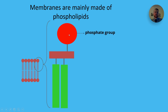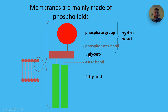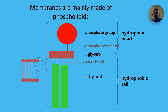First of all, we have the phosphate head, which has a chemical formula of PO4. We have the phosphoester bond, the glycerol, the ester bond, and then two fatty acids — and they can be saturated or unsaturated. This top region we refer to as hydrophilic because it's soluble in water, or water-loving. The bottom region we refer to as hydrophobic because it repels water, meaning water-fearing.